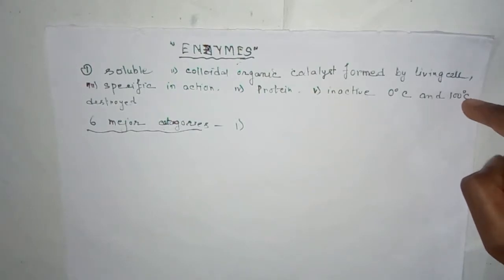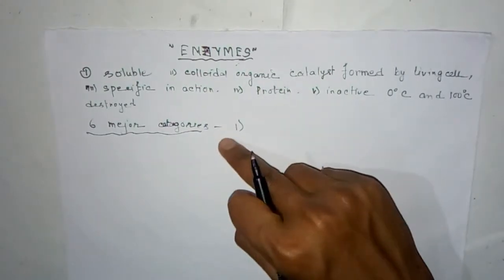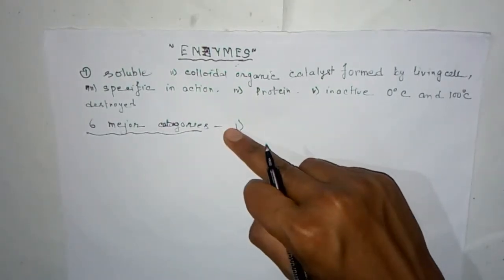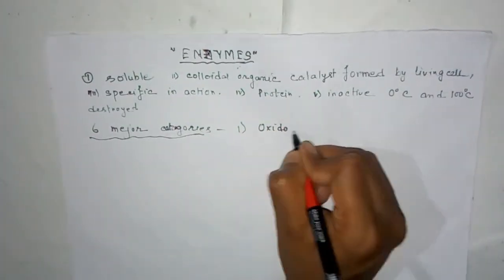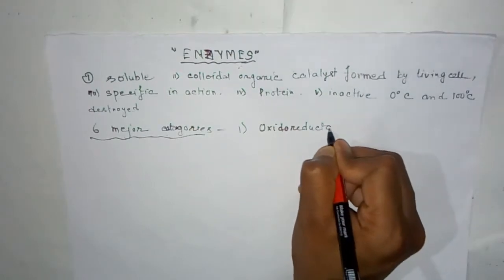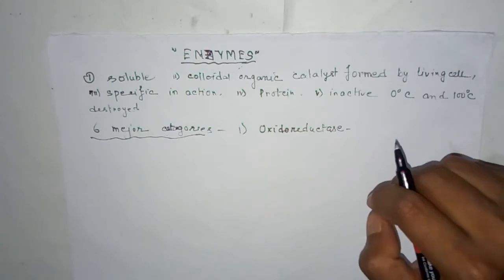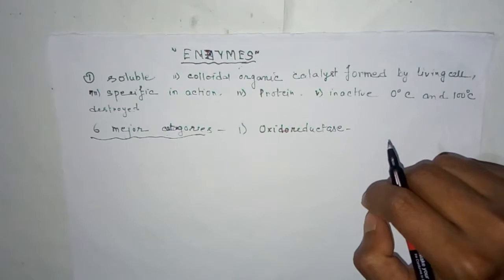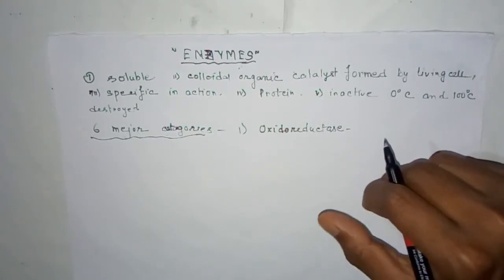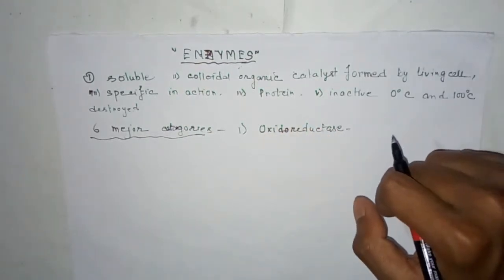The classification of enzymes — there are six major categories. They are: number one, oxidoreductase; number two, transferase; number three, hydrolases; number four, lyases; number five, isomerase; and number six, ligases. So these are the six classification categories of enzymes.